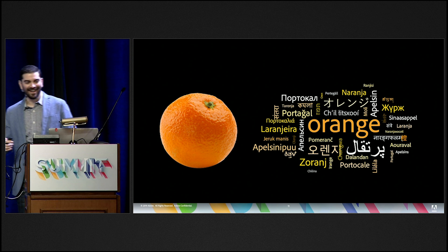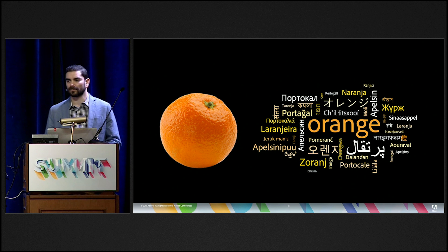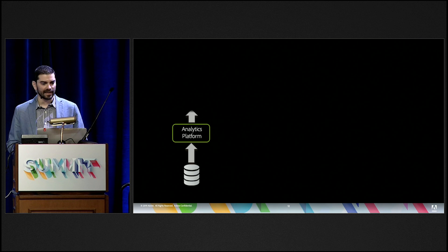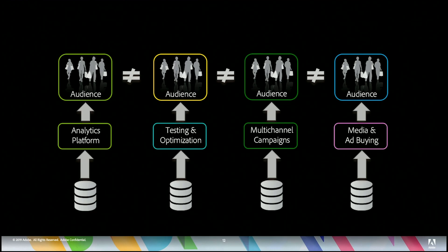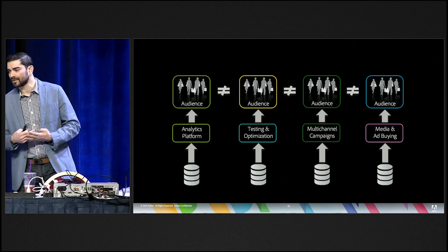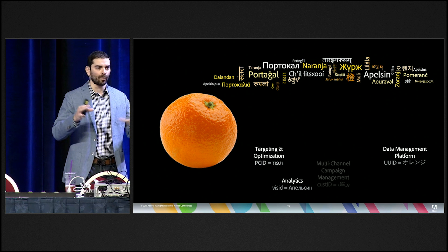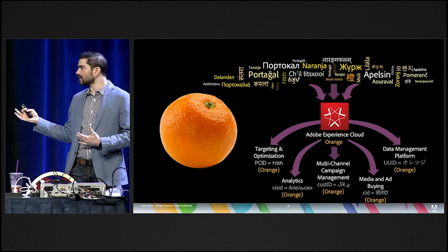When we think about all the different ways in which we're collecting data, we're also thinking about vocabulary. We've got all these different ways you can describe this fruit. And what the Experience Cloud ID service helps you do is realize that there are all these different platforms collecting data on your behalf at Adobe — analytics, Target for testing and optimization, Campaign, Marketo for multi-channel campaigns, Ad Cloud and Audience Manager for media and ad buying.